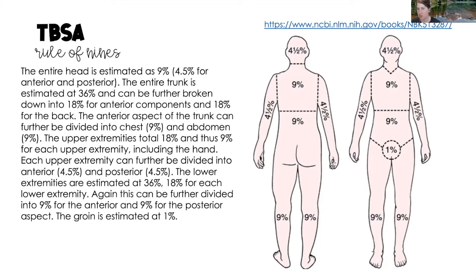The perineum or genitalia will be 1%. Moving to the lower half of the body, each entire leg is 18%, which can be subdivided into anterior 9% and posterior 9%, and further divided into upper anterior, lower anterior, upper posterior, and lower posterior at four and a half percent each.